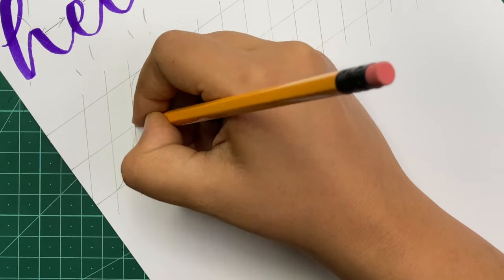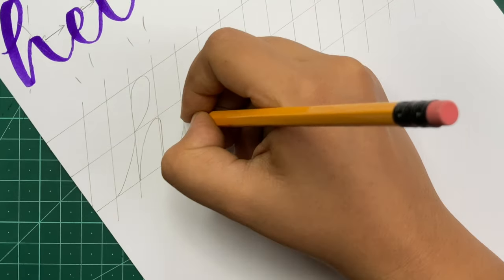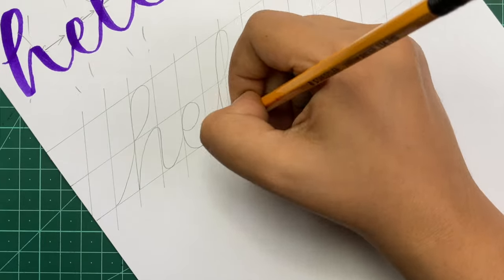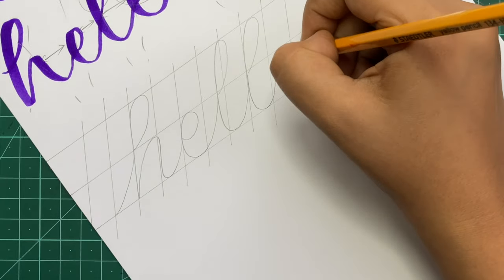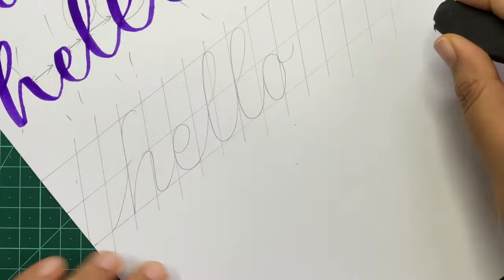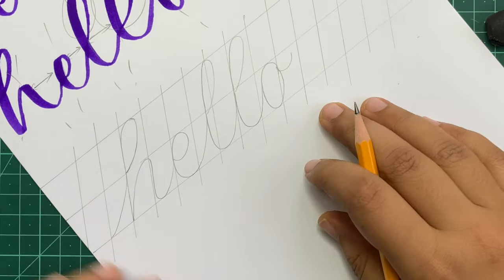Then, draw the word or phrase with a pencil first. This gives you room to correct any errors in shape. Also, it gives you a preview of how your final calligraphy is going to look like.